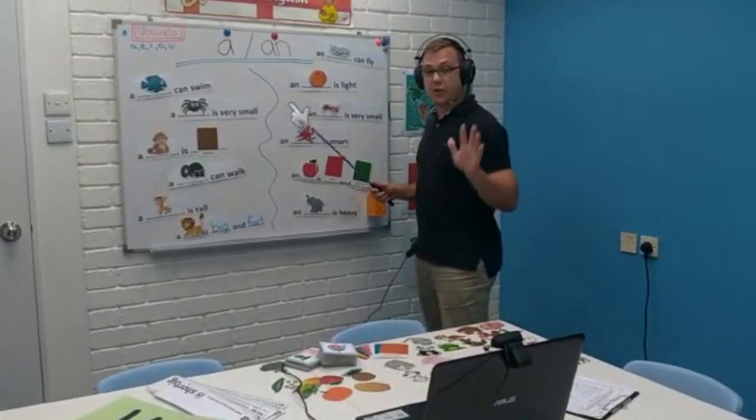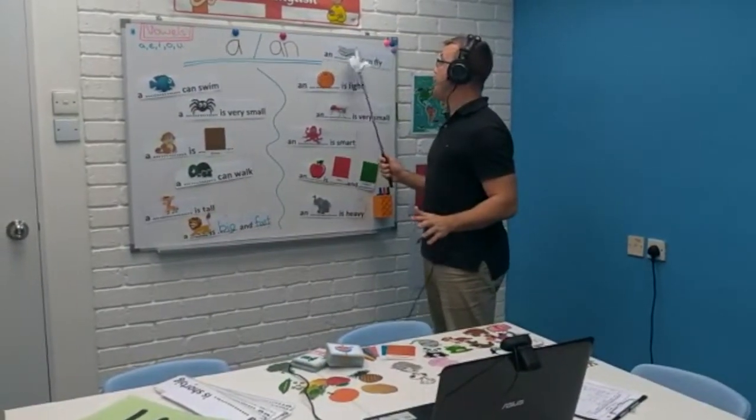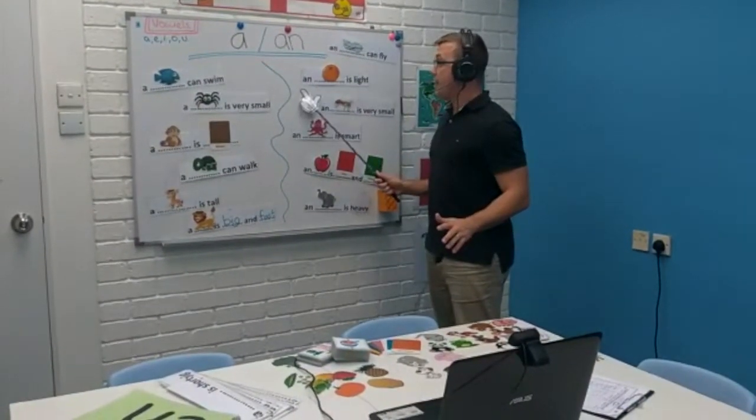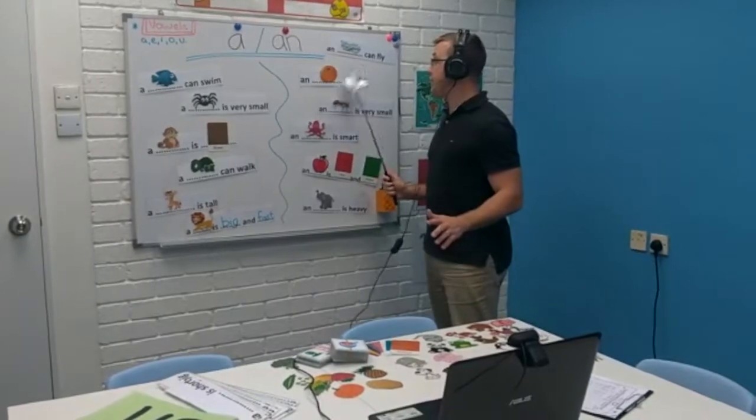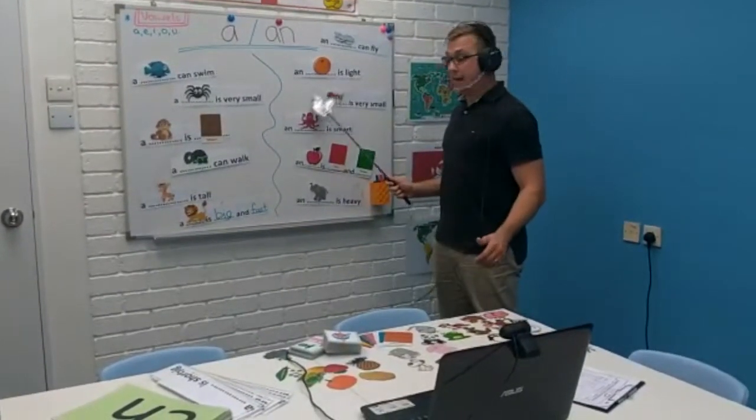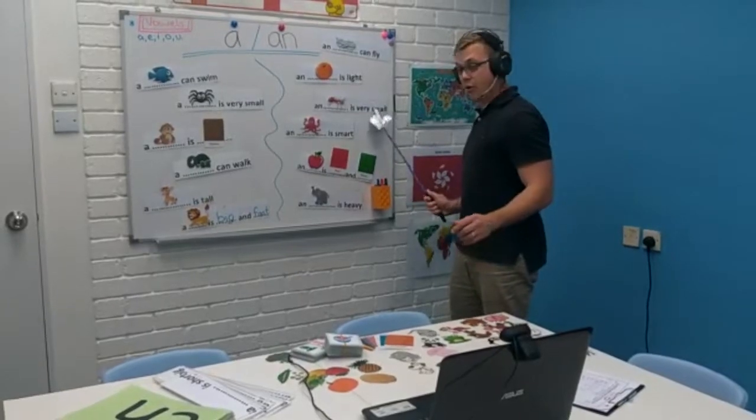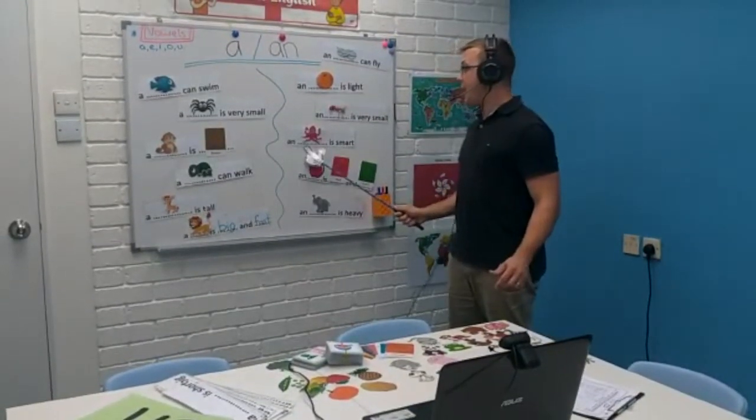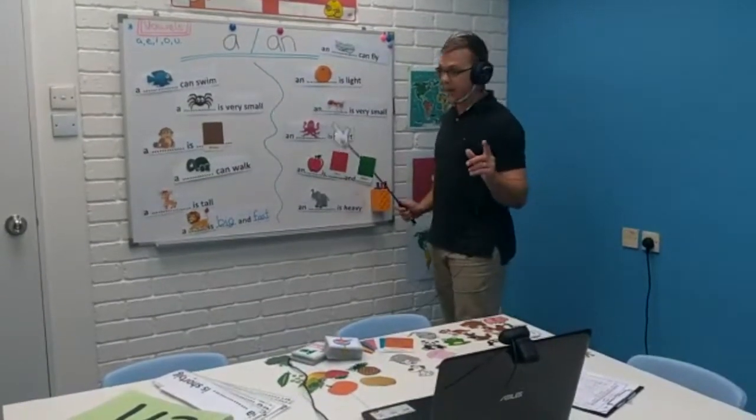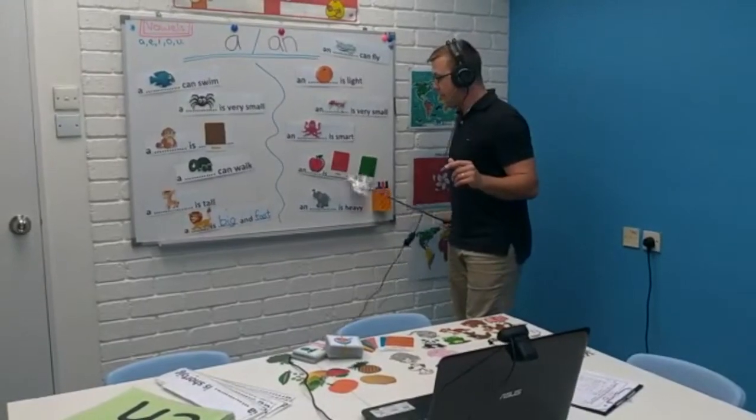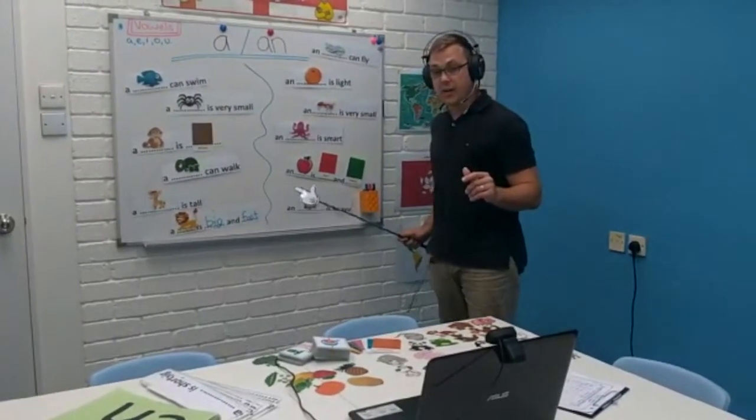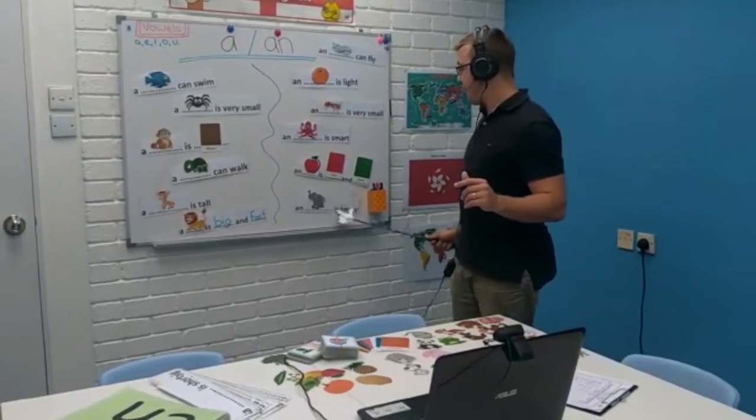Okay, and finish off the last ones. An aeroplane can fly. An orange is light. Yes. An ant is very small. An octopus is smart. Yes, they are. An apple is red and green, and an elephant is heavy. Very, very good.